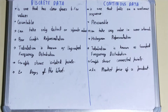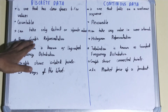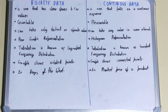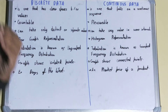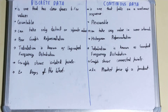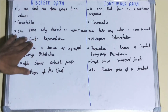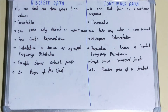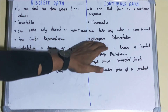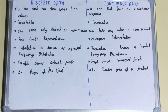Discrete data is represented in the form of a bar graph, while continuous data is represented in the form of a histogram. In a histogram, there is no space between one bar and another, whereas in a bar graph there is a space in between — representing discrete values — while the histogram represents continuous values.